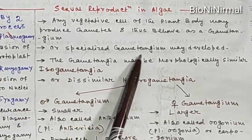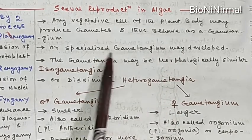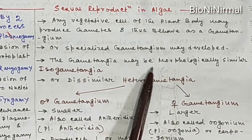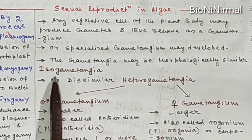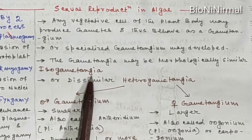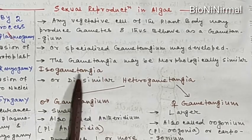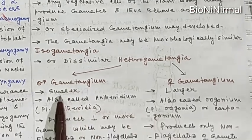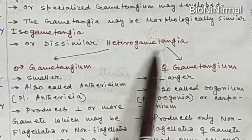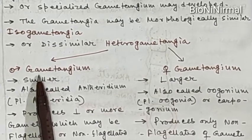A cell may be a gametangium, or a specialized gametangium may be developed. The gametangia may be morphologically similar — these are called isogametangia — or dissimilar, which are called heterogametangia.